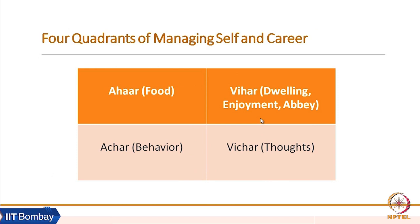The different quadrants of good life are summarized in four aspects: ahar, vihar, achar, and vichar. These are two sets of life experiences and life activities also used as a reflection of the basic quadrants of good life — a healthy life that naturally has implications on success in career. If I have a healthy body and mind, naturally I will be able to perform best in my career. The four quadrants of managing self and career can be summarized as ahar, vihar, achar, and vichar.